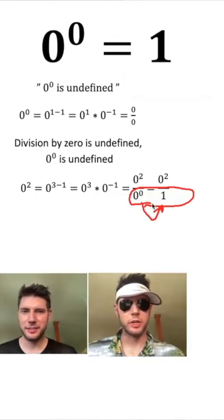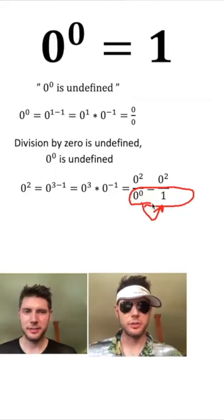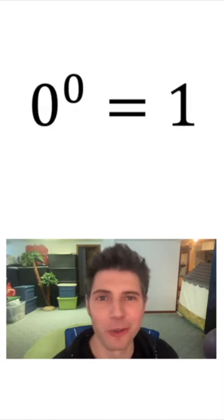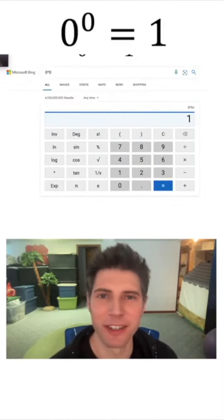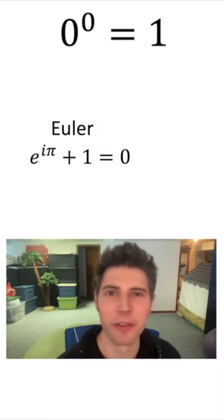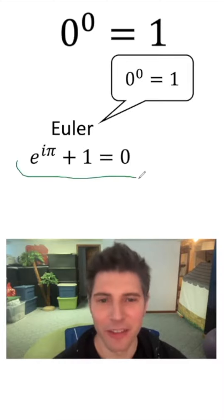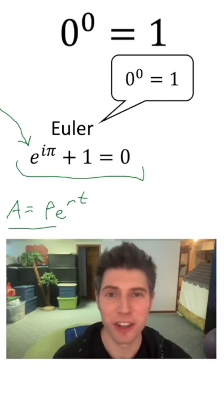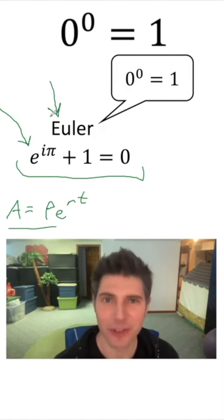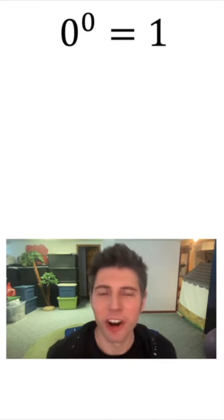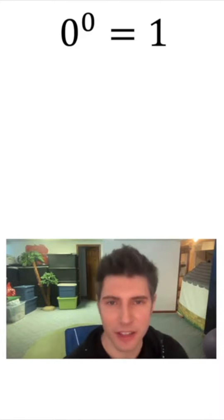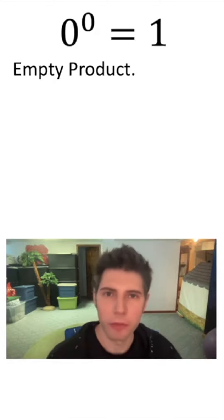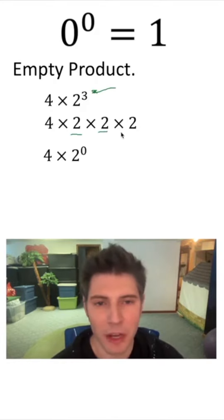So 0 to the 0 should equal 1. Google says 0 to the 0 equals 1. Bing says 0 to the 0 equals 1. Euler discovered this — he said 0 to the 0 equals 1. And the variable e in continuous growth formulas is named after the 'e' in Euler's name. The reason so many say 0 to the 0 equals 1 is called the empty product: it's what happens when you multiply by no factors. What the exponent 3 means is that we are multiplying by three 2s — that changes the number. If there were no 2s here, we call it the empty product because there's nothing there — it's not being multiplied by anything. That means 2 to the 0 equals 1, and the same logic holds when it's 0 to the 0.